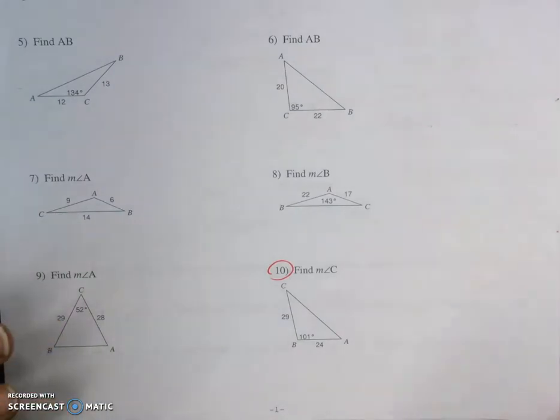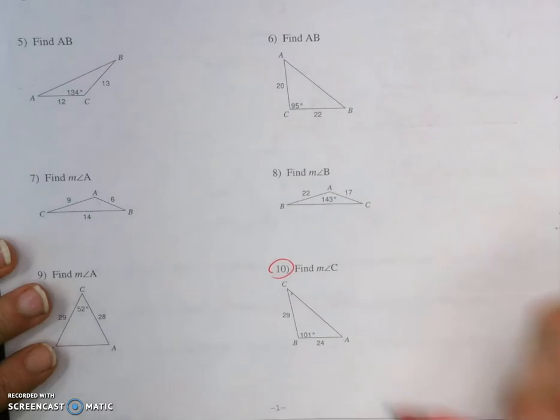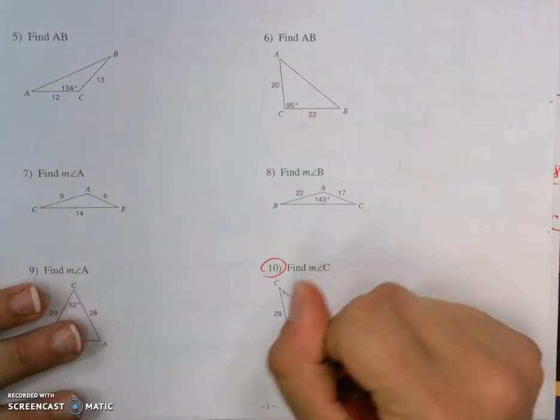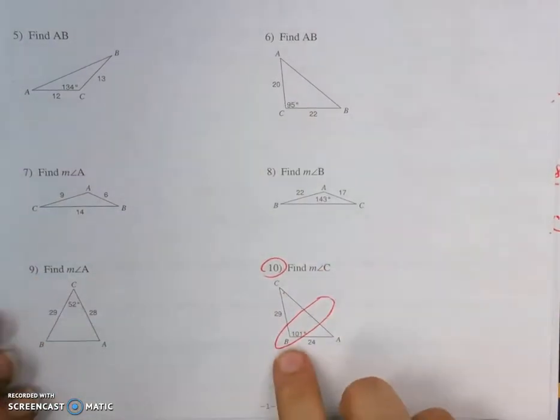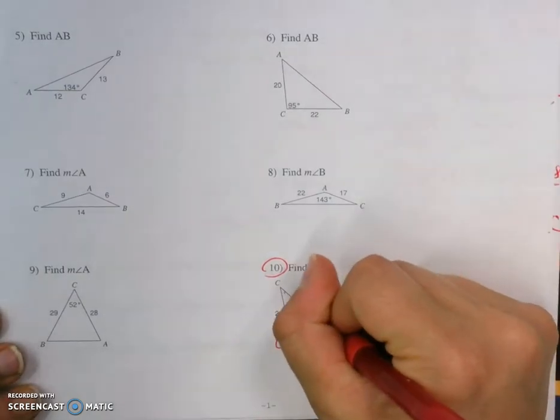So on number 10, we're looking for the measure of angle C, and this is Law of Cosines. If we're looking for the measure of angle C right here, we can't actually find that right away. Because with Law of Cosines, we always use side angle side, where the angle is sandwiched between two sides. If we're using this angle B, we can find the side opposite it, side B.